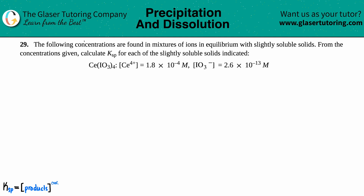Number 29. The following concentrations are found in mixtures of ions in equilibrium with slightly soluble solids. From the concentrations given, calculate the Ksp for each of the slightly soluble solids indicated. We have this compound: CeIo3-4.